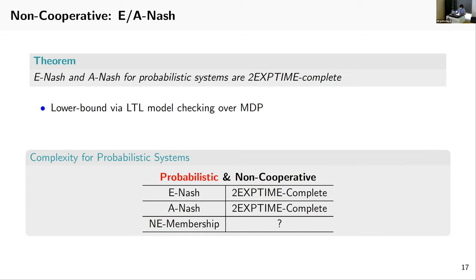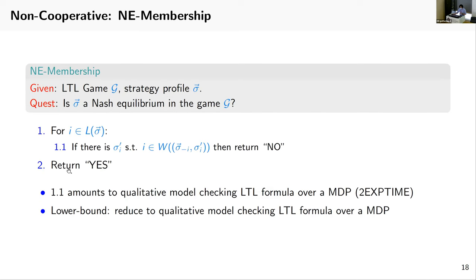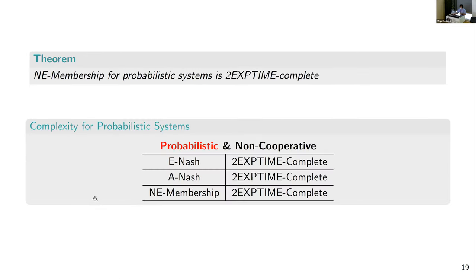For the lower bound, we use LTL model checking over Markov decision processes. So E-Nash and A-Nash are both double exponential time complete. Now what about membership? For membership, we find one losing player. If there exists an alternative strategy σ_i' such that it can turn itself into a winner, then we know that σ is not a Nash equilibrium. This step can be done by qualitative model checking of LTL formulae over Markov decision processes, and this can be done in double exponential time. For the lower bound, we reduce from LTL model checking over MDPs. So we have double exponential time complete for Nash equilibrium membership.